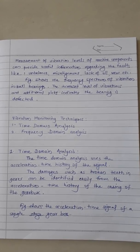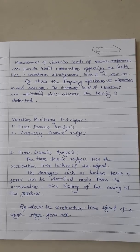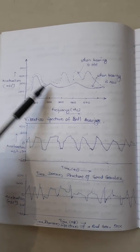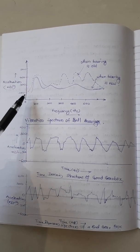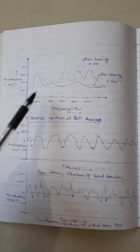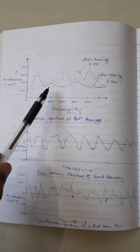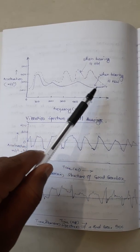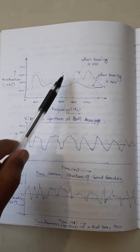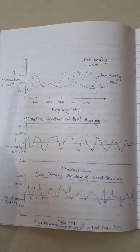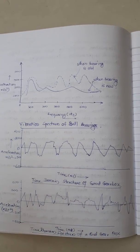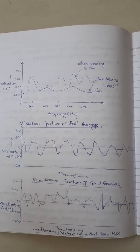The figure shows the frequency spectrum of vibration in ball bearings. The increased level of vibration and additional peaks indicates the bearing is defective. Looking at the frequency versus acceleration plot of the bearing: when the bearing is new, the graph shows a baseline. When the bearing is old or worn, changes in the graph such as increased acceleration can be seen, indicating wear and tear in the bearing. This is the vibration spectrum of a ball bearing.